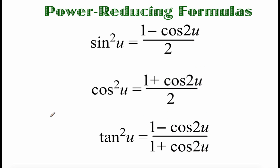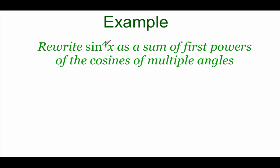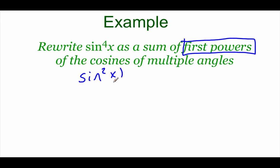The next set of formulas are called power reducing formulas. They let us take something that is squared and rewrite it as a first-powered trig function. All of these formulas show up on your trig sheet. In this example, we've got sine to the fourth power of x, and we want to rewrite it so everything has a first power. We can recognize sine to the fourth as sine squared of x times another sine squared of x, and then break down each one individually.